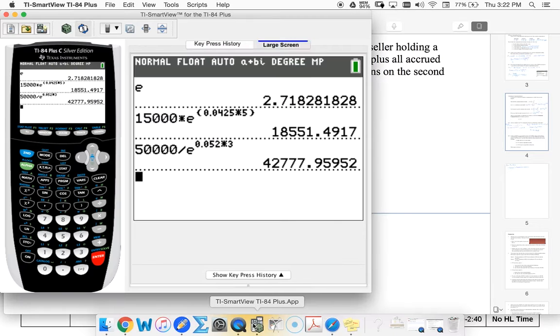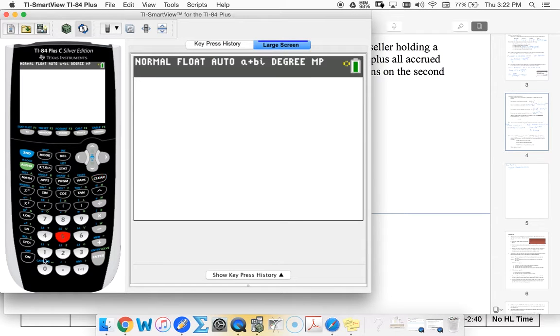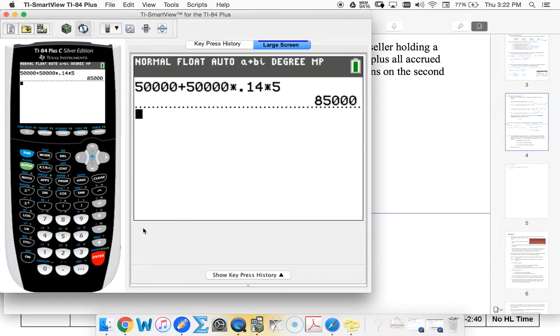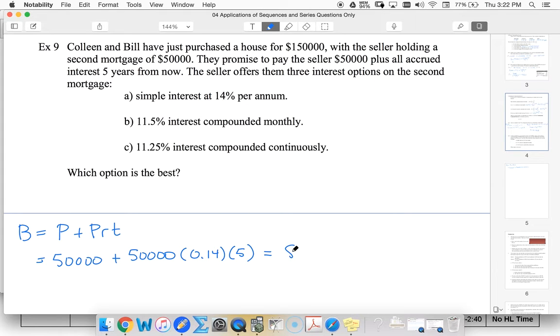Let's see how much they would have to pay back. $50,000 plus $50,000 times 14 percent times five years. They'd have to pay back $85,000. That's a lot of money.